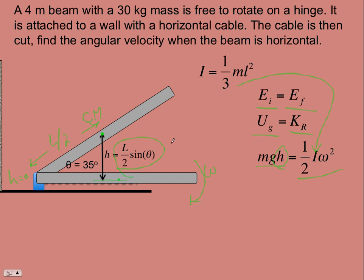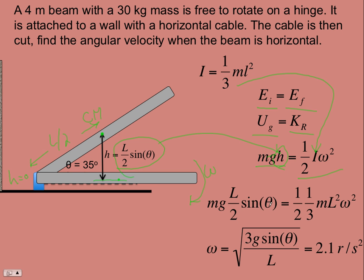Now we can put that in for h and we get some simplification—the mass goes, the 2 goes, one of the L's goes. We can solve for omega and put in theta equals 35 and L is 4, and you get 2.1 radians per second.